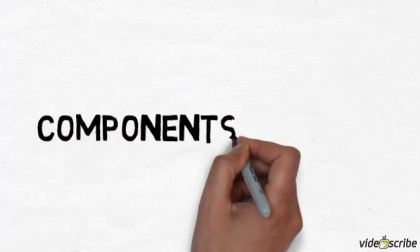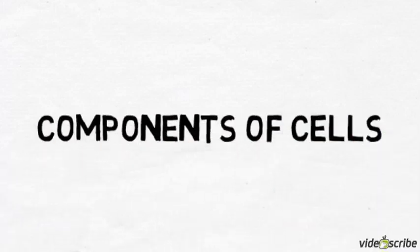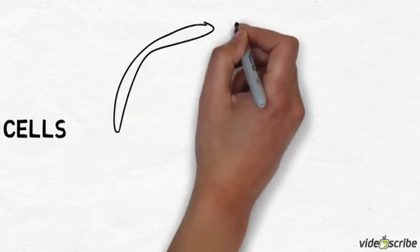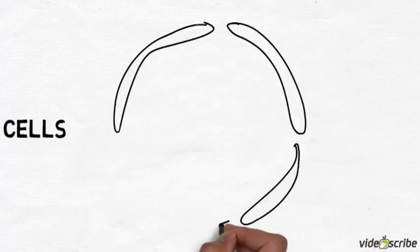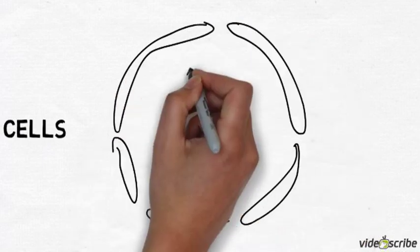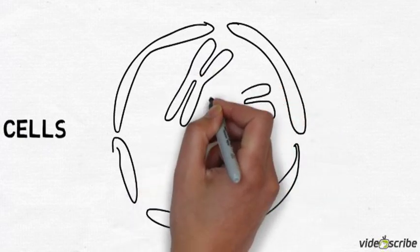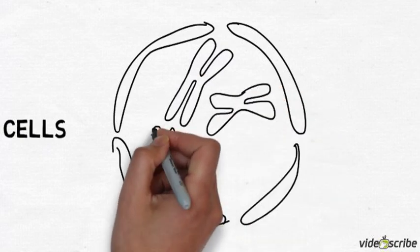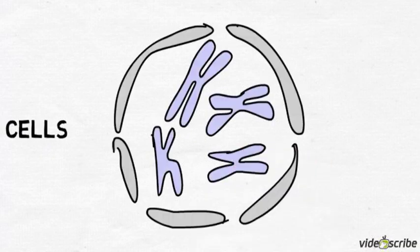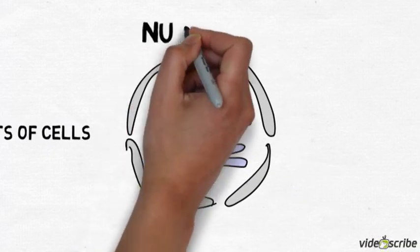We're going to start by looking at components in cells. The first component is the nucleus. The nucleus is surrounded by a membrane to keep it separate from the cytoplasm, and it contains DNA in the form of chromosomes. It controls the cell and which proteins the cell makes.